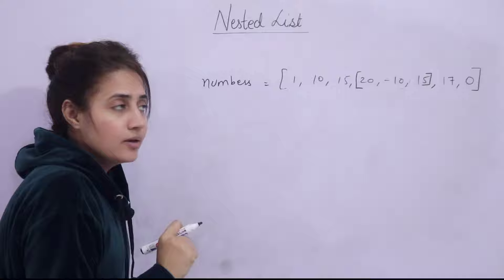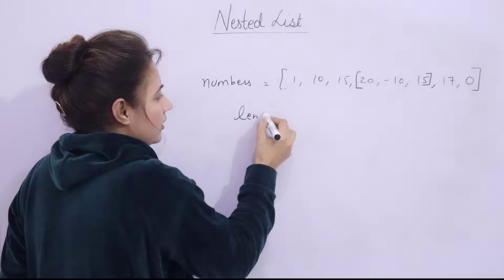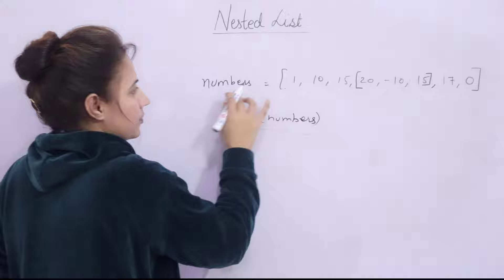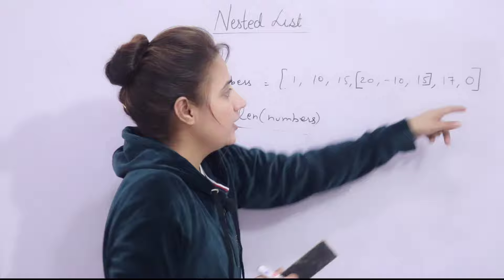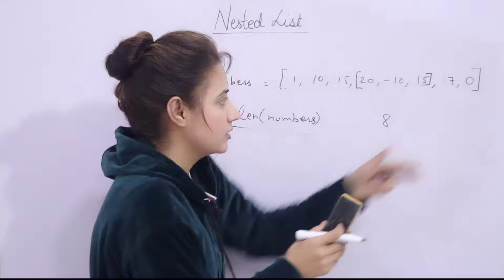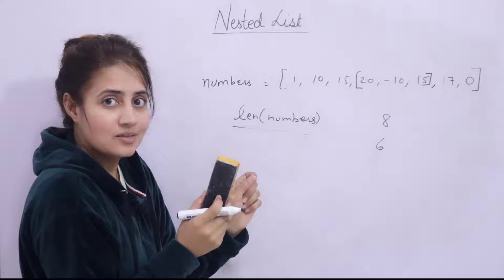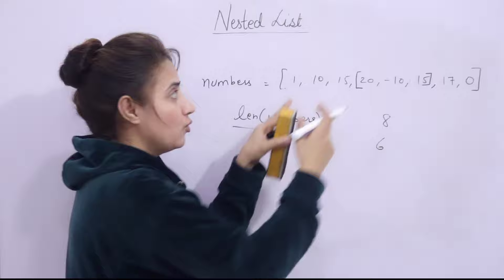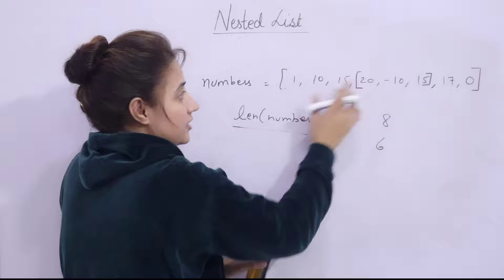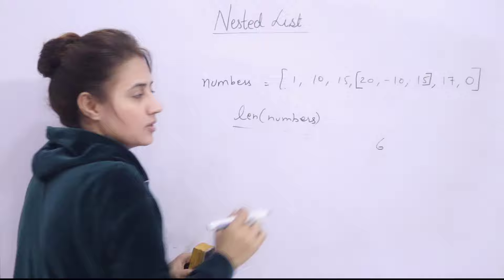Now here's a question: if I find the length of this list using the len() function, what would it be? Is it 8 or 6? The answer is 6. Why? Because the inner list [20, -10, 15] is considered to be one single item of the outer list — not three items. So the length is 1, 2, 3, 4, 5, 6 — not 8.